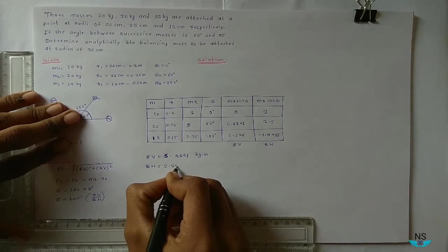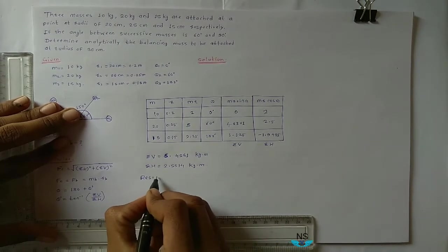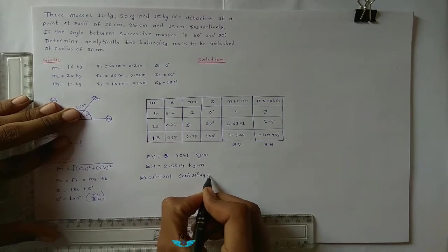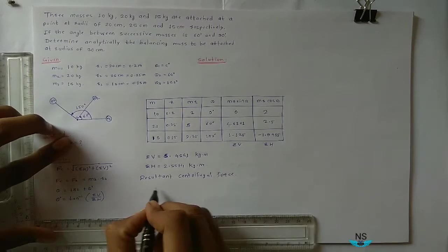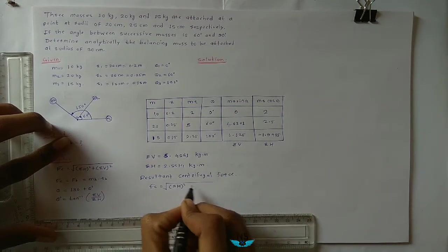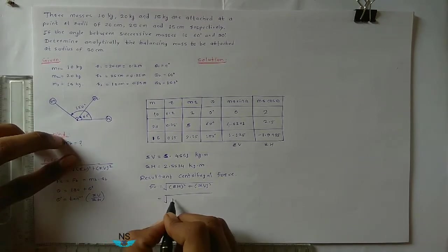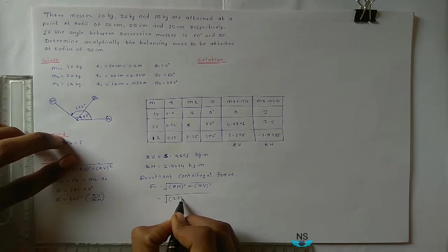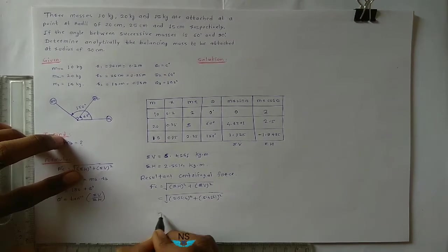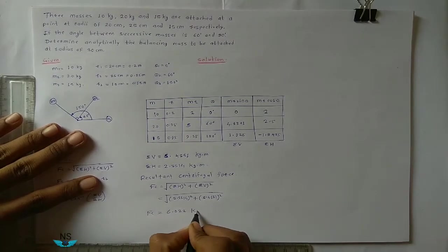Now find out resultant centrifugal force. So Fc is equal to root of summation H square plus summation V square. That is equal to 2.5514 square plus 5.4551 square. Fc becomes 6.022 kg meter.